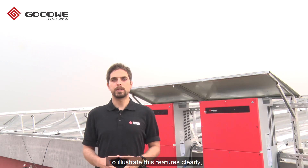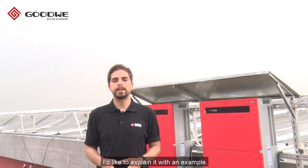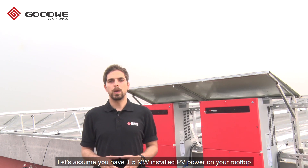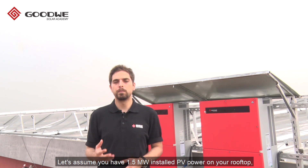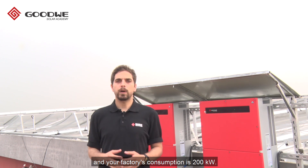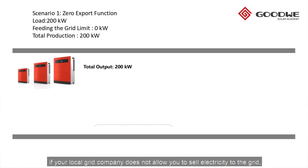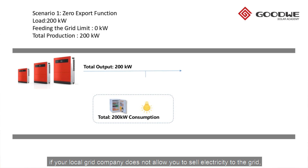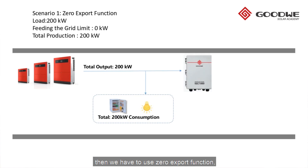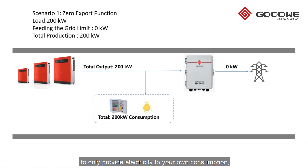To illustrate these features clearly, let me explain with an example. Let's assume you have 1.5 megawatt installed PV power on your rooftop and your factory's consumption is 200 kilowatt. In the first scenario, if your local grid company does not allow you to sell electricity to the grid, then we have to use the zero export function. The inverters will reduce production to 200 kilowatt to only provide electricity for your own consumption but won't feed the grid.